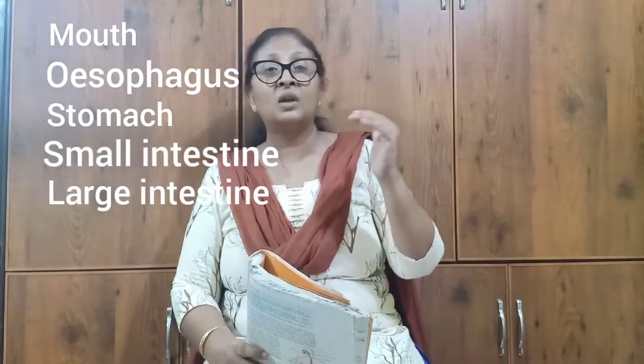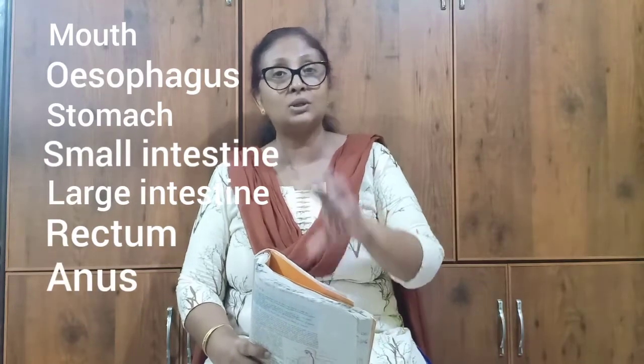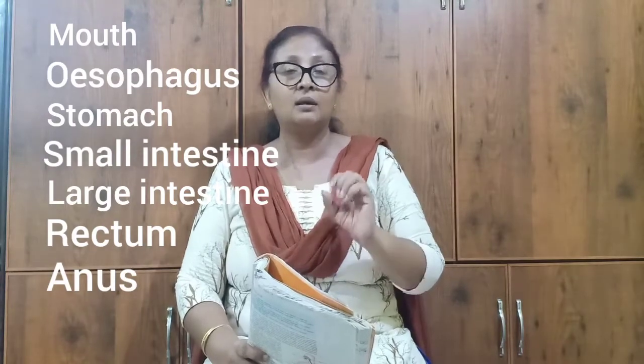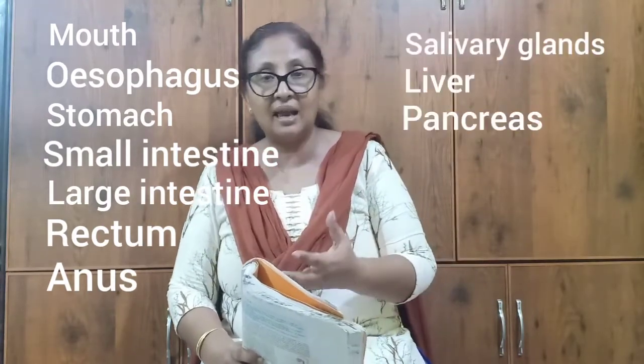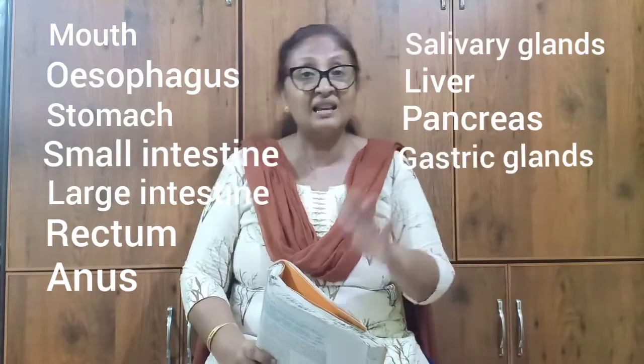The alimentary canal is a long tube that starts with the mouth and ends with the anus, otherwise known as the gut. The various parts of the alimentary canal are: mouth (also known as the buccal cavity), esophagus (also known as the food pipe), stomach, small intestine, large intestine, rectum, and anus. Also associated with this are various glands: salivary glands, liver, pancreas, gastric glands, and intestinal glands.